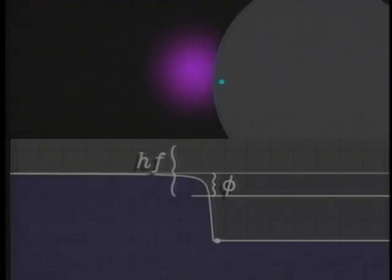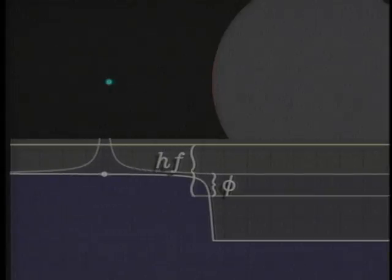And when light knocks electrons out of a metal, their energy depends on the frequency, not the amplitude. So what's really going on?